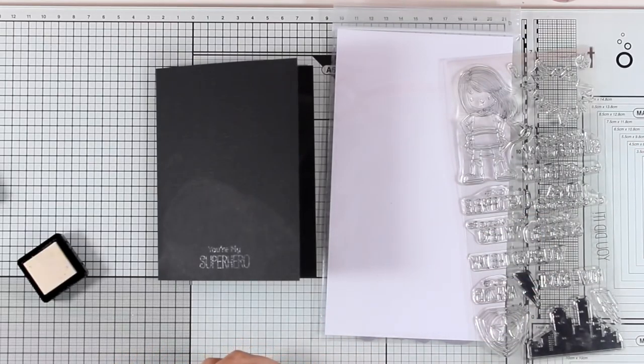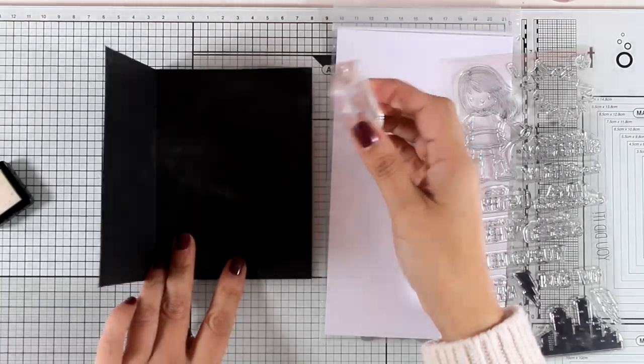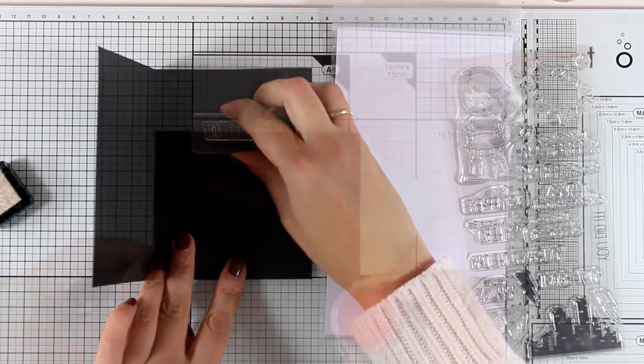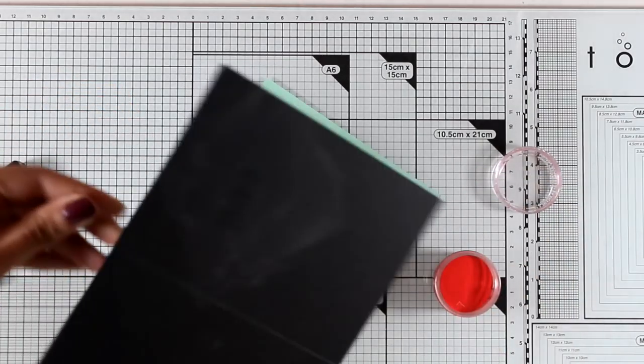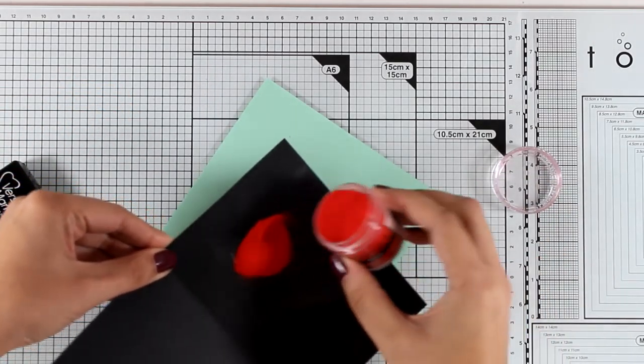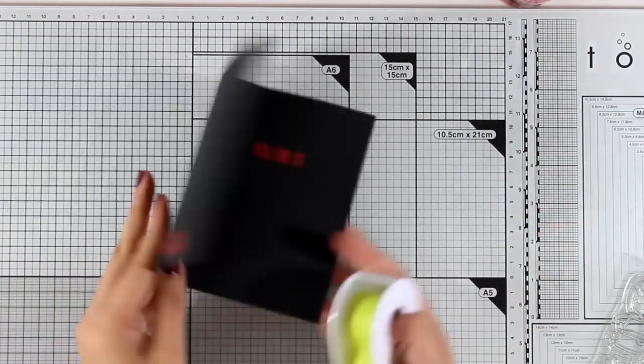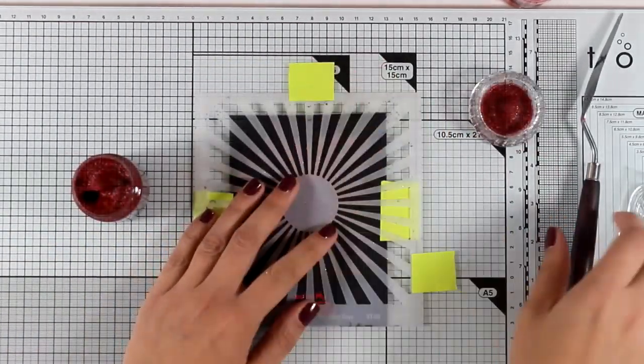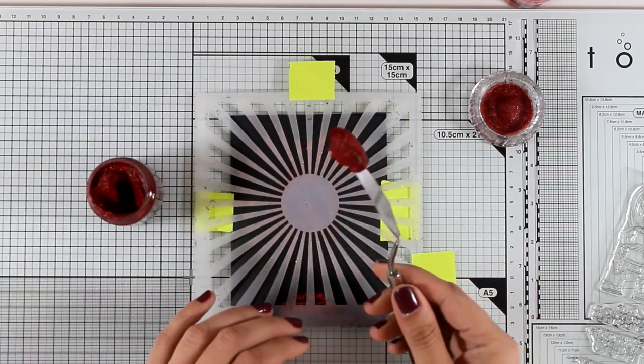I'm also going to stamp a little sentiment on the inside of the card that says 'you did it' and I'm actually creating this card to hand it out to my daughter just because she did exceptionally well on school this year. Since this is going to be a superhero card I wanted it to be very bold and that's why I chose to go with a black card base and I'm adding red embossing powder just to make it look even more striking.